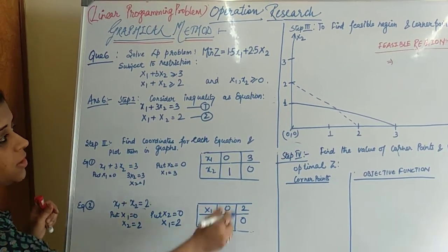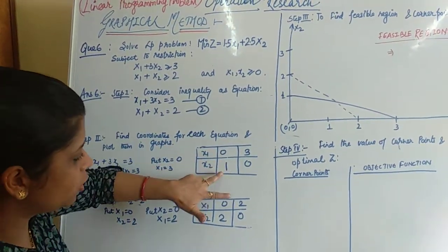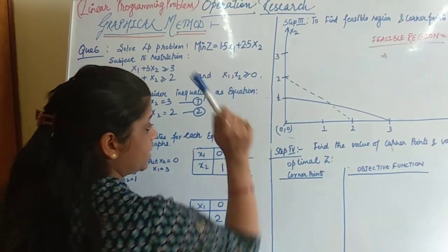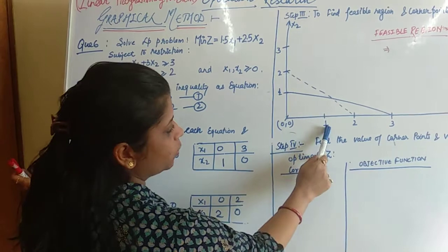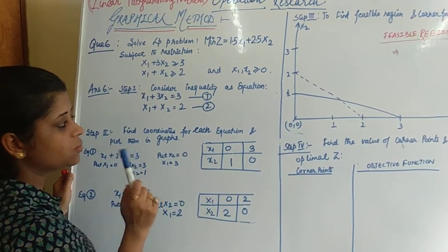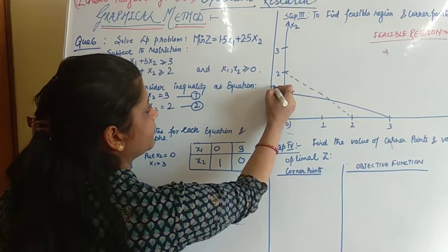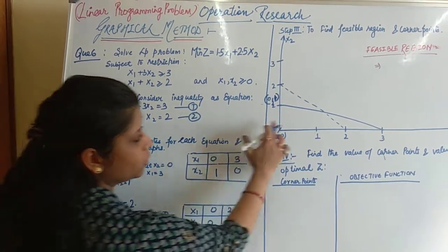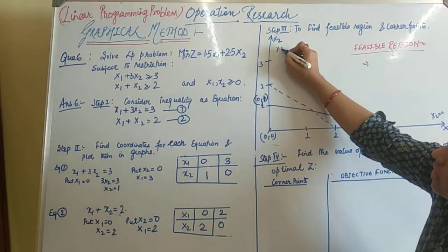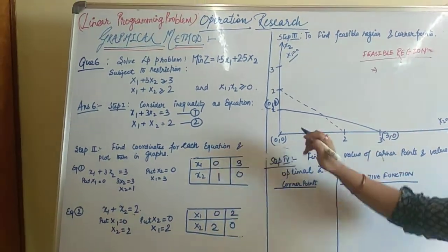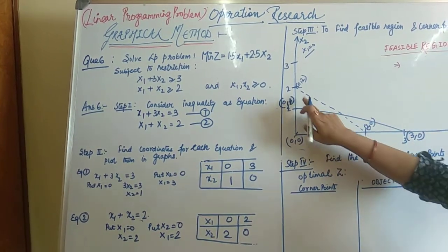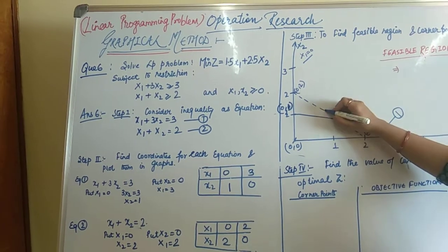For the third step, we have to plot these equations in the form of lines on the graph. We are having points like 0, 1, 2, 3. The origin is 0, 0. This is the x1-axis and this is the x2-axis. Equation 1 contains the point (0, 1) and (3, 0). Equation 2 contains the point (0, 2) and (2, 0). This is equation 1 and this is equation 2.